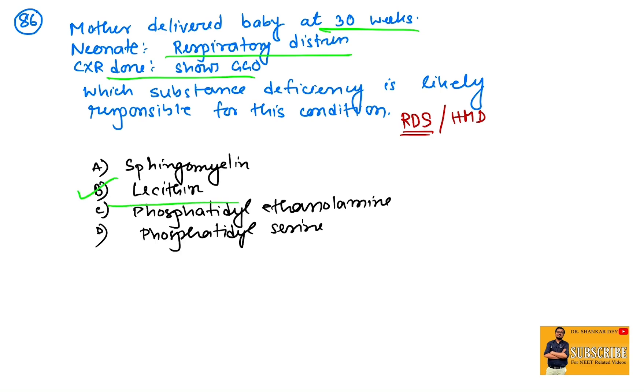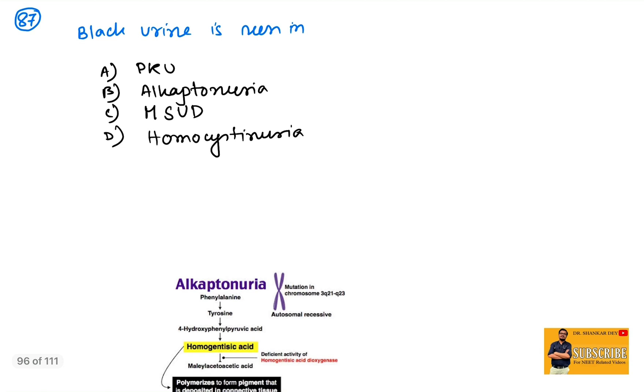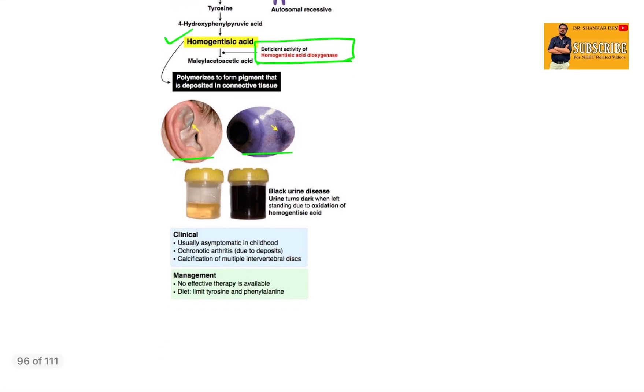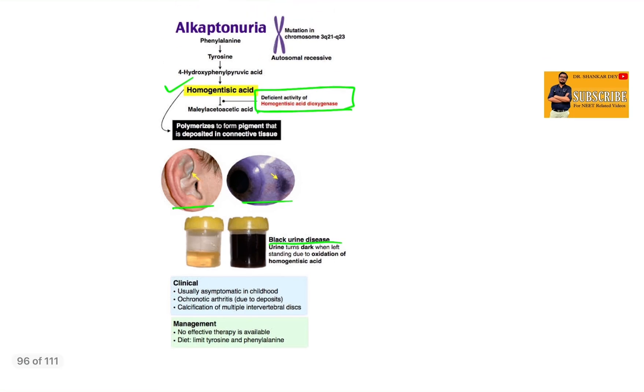Coming to 87: black urine is seen in alkaptonuria, not phenylketonuria or maple syrup urine disease, not homocystinuria. So alkaptonuria, as all of you know, is due to homogentisic acid oxidase deficiency, which causes ochronosis or black color deposits in the pinna, in the eye, black colored urine. Urine turns dark when left standing due to oxidation of homogentisic acid. So this is alkaptonuria due to homogentisic acid oxidase deficiency, black colored urine.